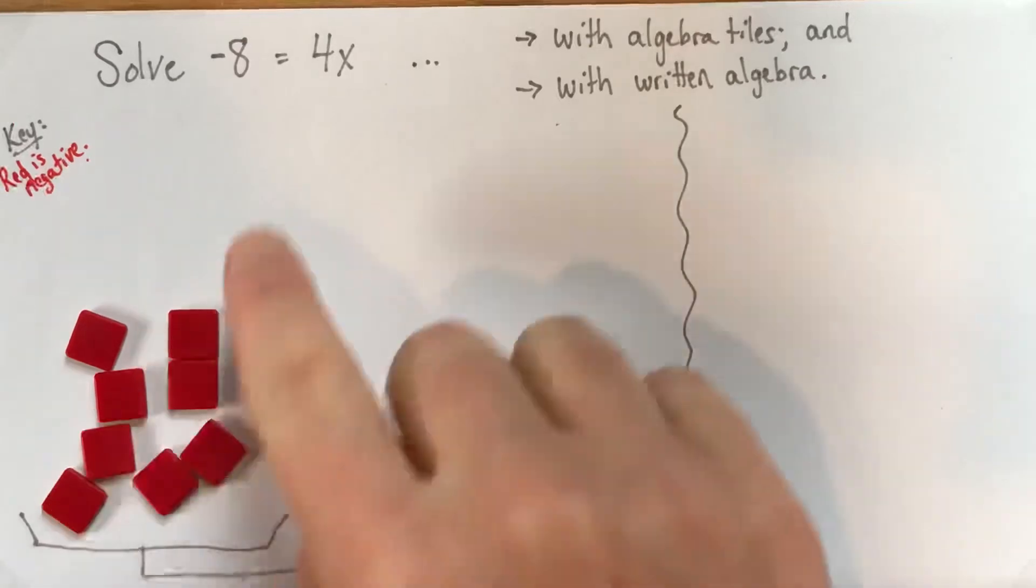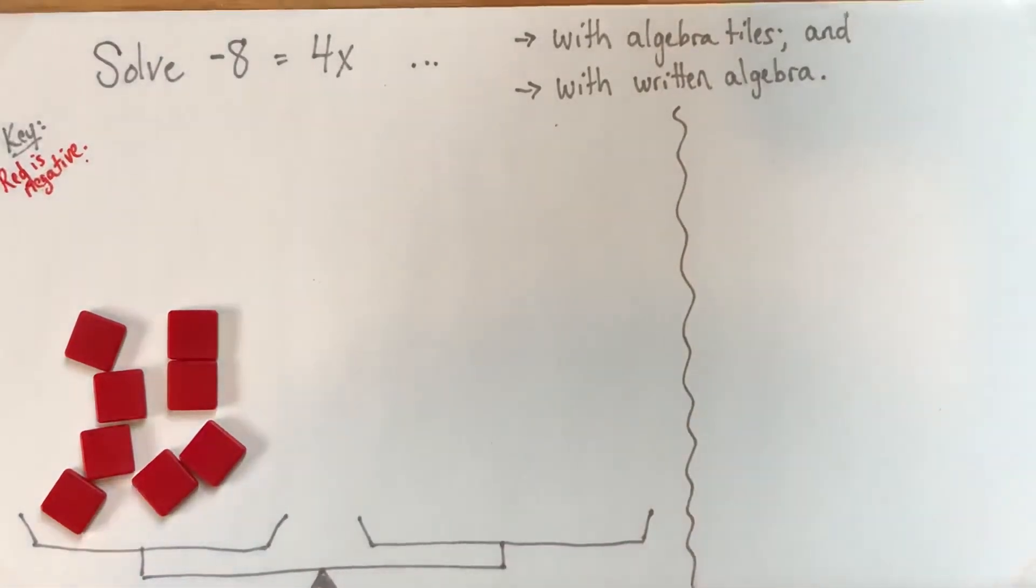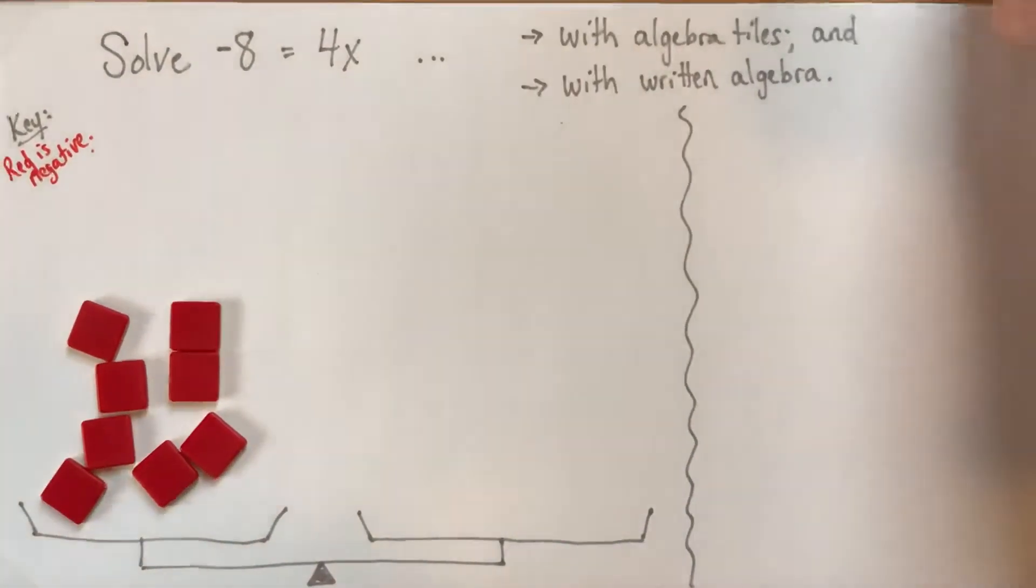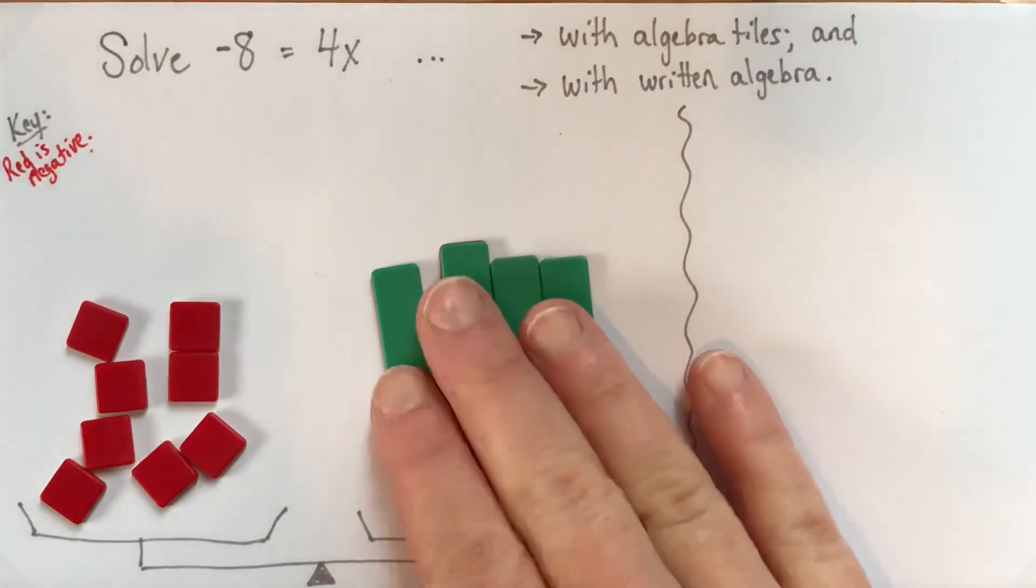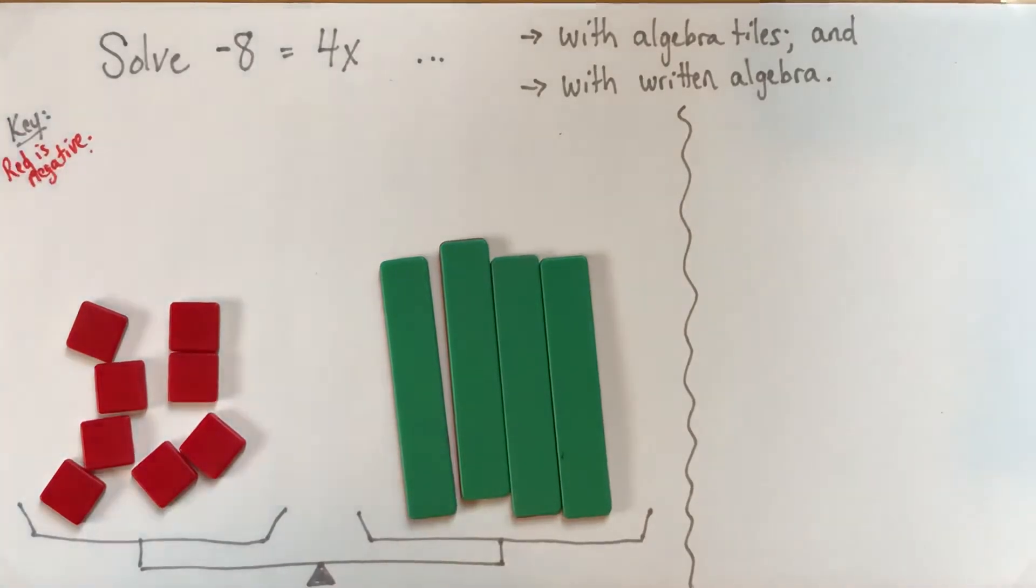So on that side, that balances with 4x. And my x's are green. There. So negative 8 equals 4x.